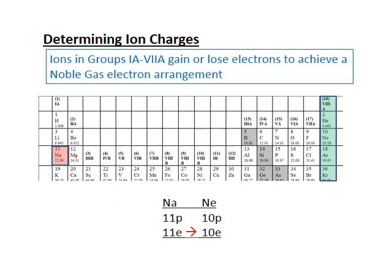On the other side of the table, elements tend to lose electrons easily. Sodium, element number 11, likes to lose electrons to achieve a noble gas configuration. Since neon is element number 10, sodium loses one electron to look just like neon, giving it 11 protons and 10 electrons — a net charge of plus one. There's no name change for metal ions, so it's still called sodium ion. Elements with positive charges are called cations; those with negative charges are called anions.